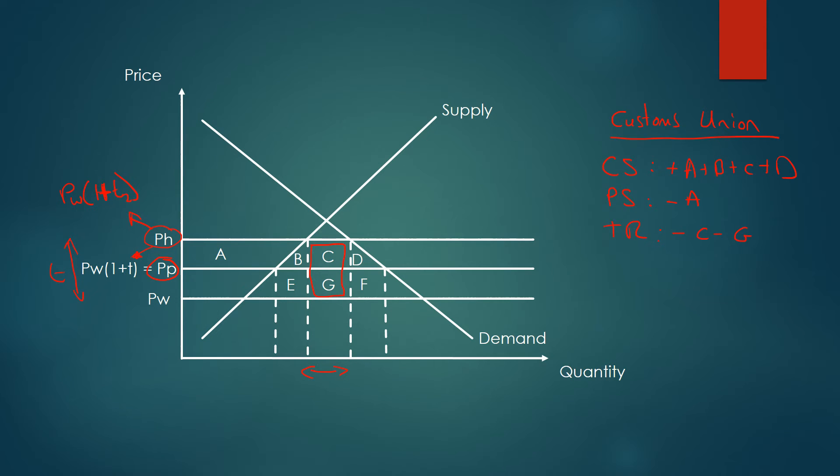Now, how about if we do a unilateral reduction in tariffs? Again, consumer surplus is going to be A plus B plus C plus D because the price pH has fallen to this new level.